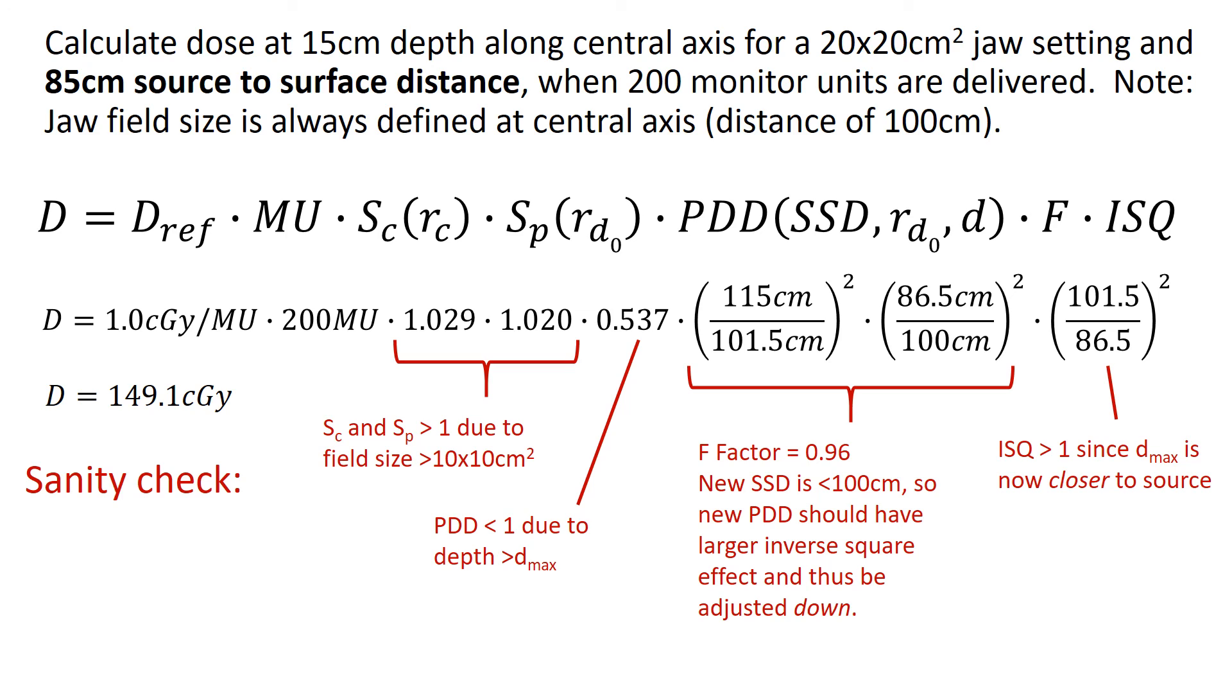And then finally, our inverse square correction is greater than 1. And this makes sense because that normalization point went from 100 cm SSD plus D max to 85 cm SSD plus D max. So it got quite a bit closer, so we would expect that to bump up the output to that normalization point.